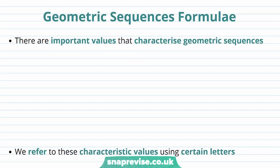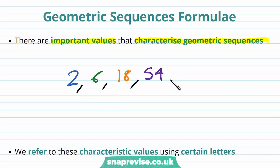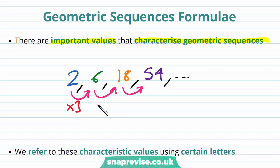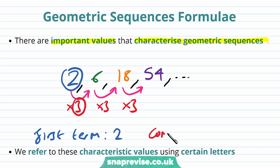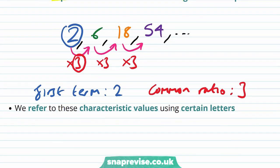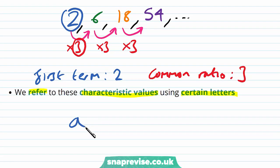So what exactly are the geometric sequences formulae? There are important values that characterize geometric sequences. Let's say again we have the sequence 2, 6, 18, 54 and so on. All we have done by the nature of a geometric sequence is to multiply by 3 at each stage. And these two values — the first term 2 and the common ratio 3 — are the two important values that characterize this geometric sequence. We refer to these characteristic values using certain letters: for the first term we write a, and for the common ratio we write r.